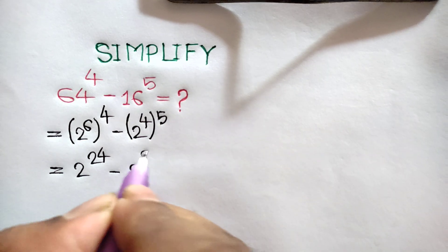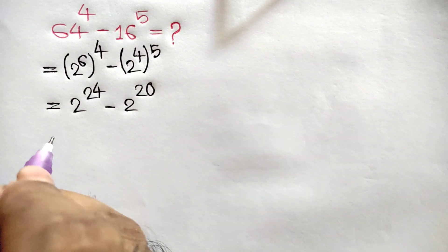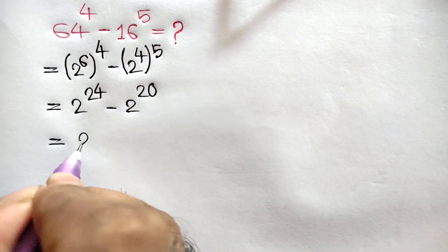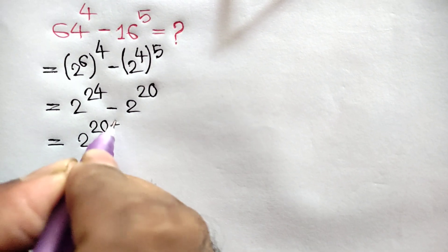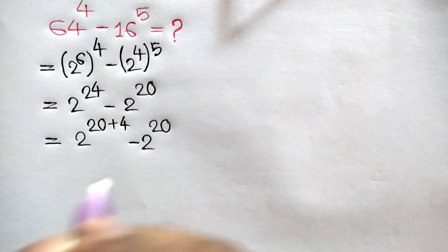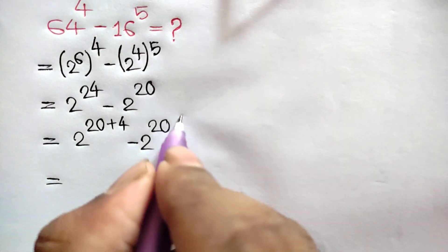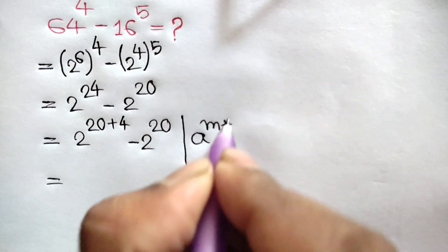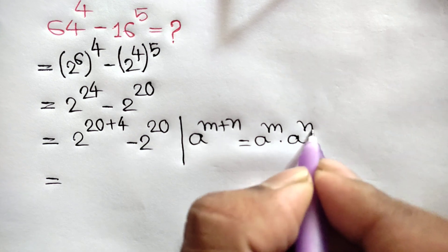5, that means 20. This is equal to 2 to the power 24, which can be written as 20 plus 4, minus 2 to the power 20. Now we know that a to the power m plus n is equal to a to the power m times a to the power...